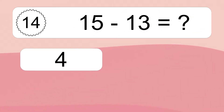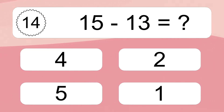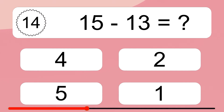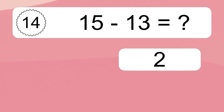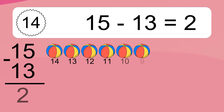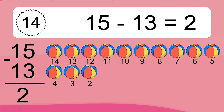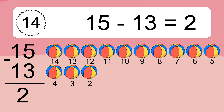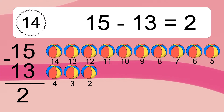15 minus 13 equals what? 15 minus 13 equals 2. Let's count it: 14, 13, 12, 11, 10, 9, 8, 7, 6, 5, 4, 3, 2.